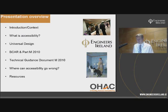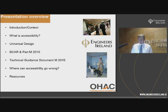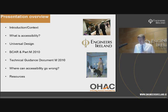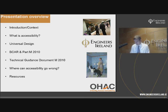Just a quick overview of what we hope to cover: a quick introduction and context to disability and access, then an overview of what accessibility means and how people perceive it. It's important to give an overview of Universal Design given that it is written into Part M of the Building Regulation. We'll also cover BCAR and Part M 2010 key requirements, where accessibility can go wrong during planning, design, construction, and handover, along with some real life examples of recent projects.